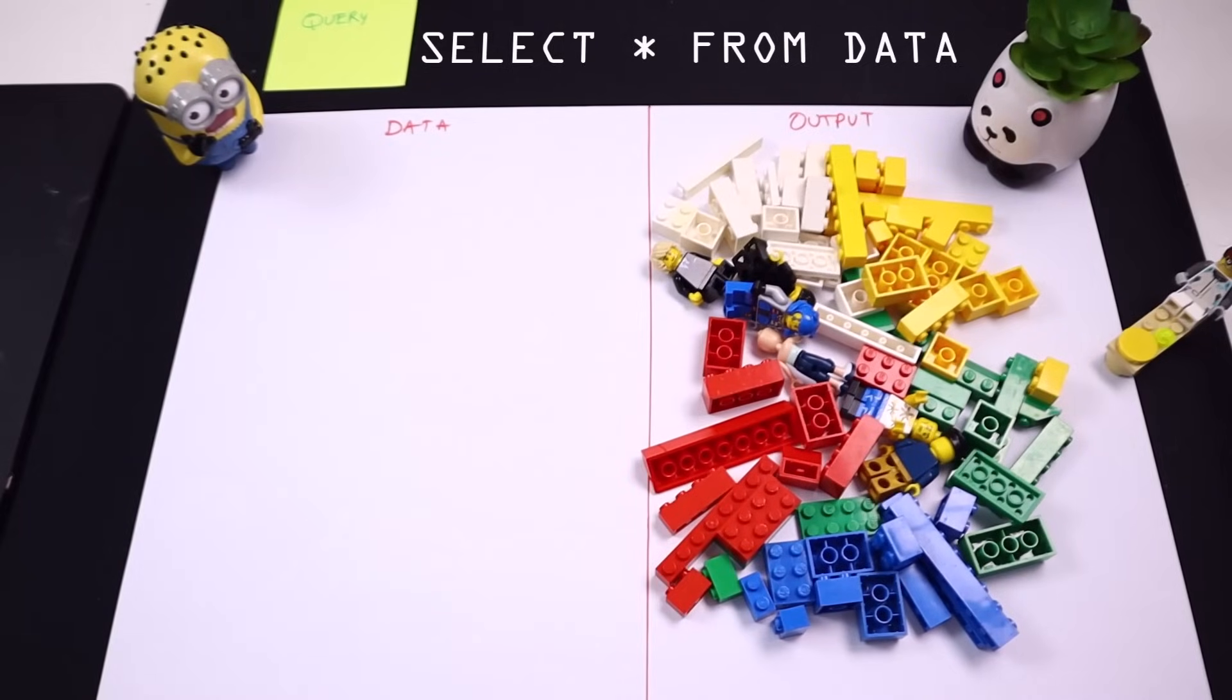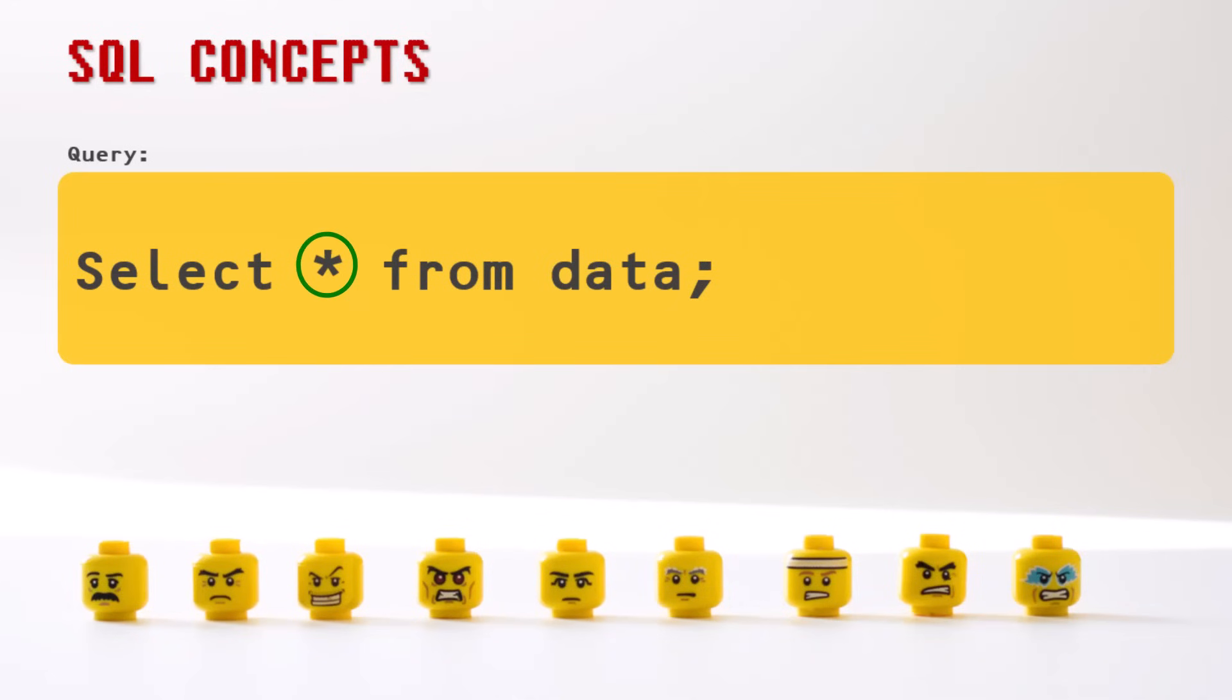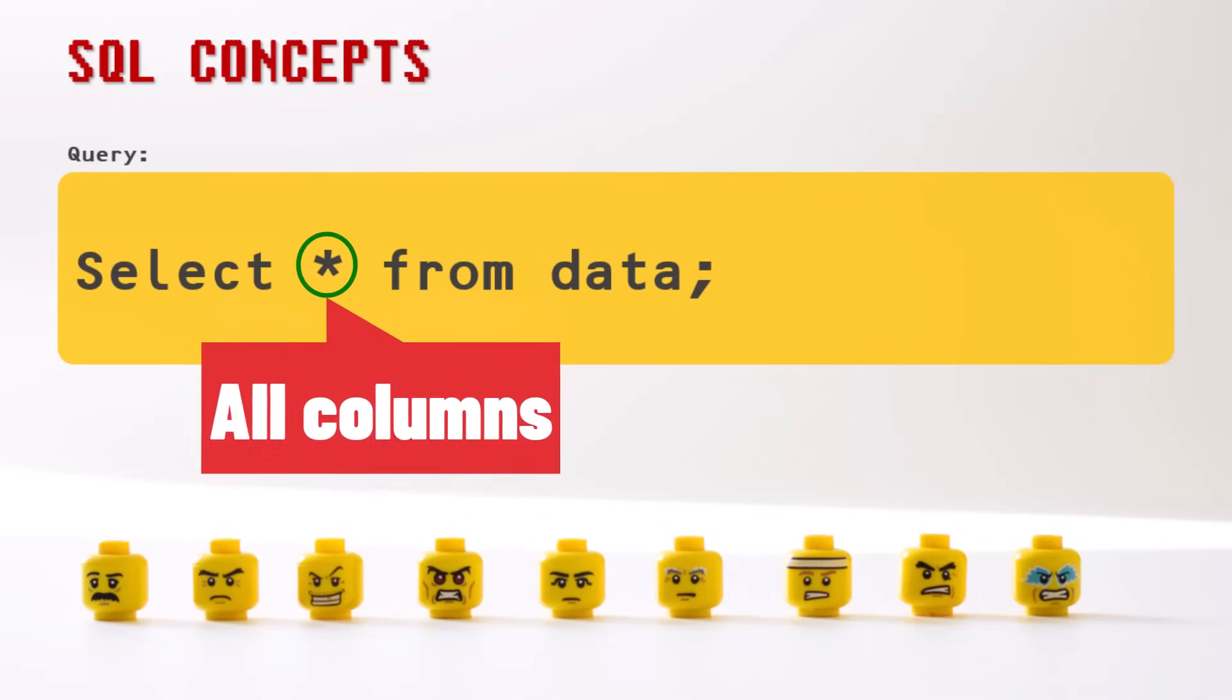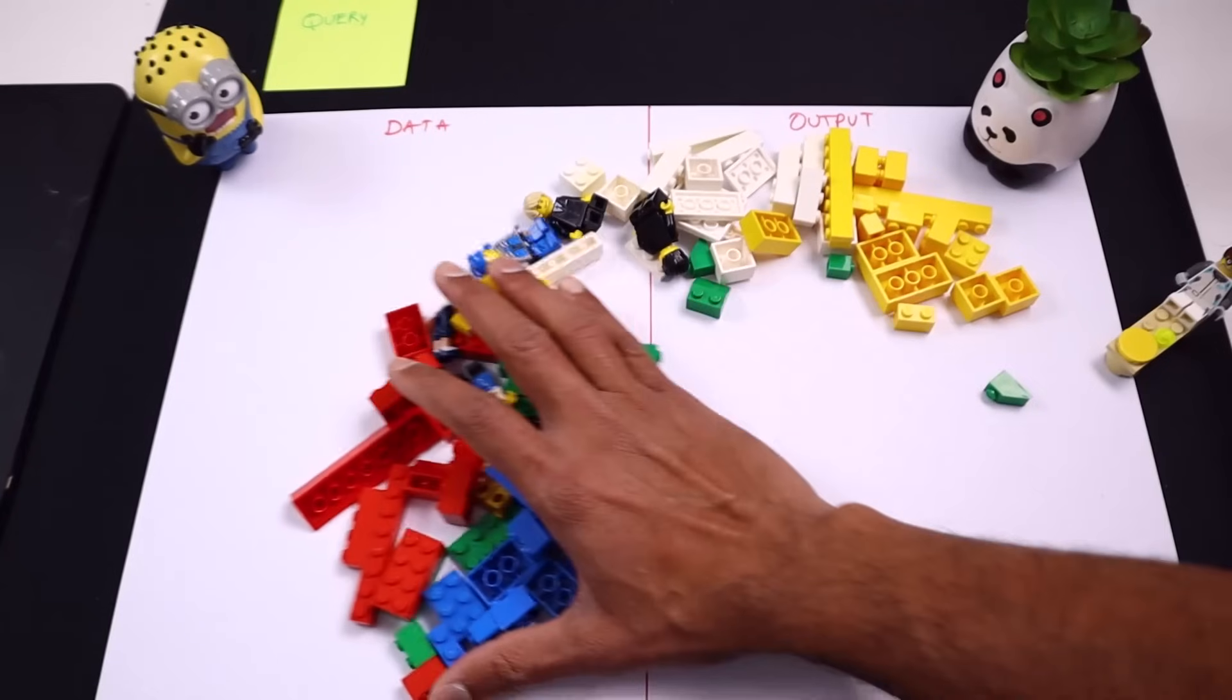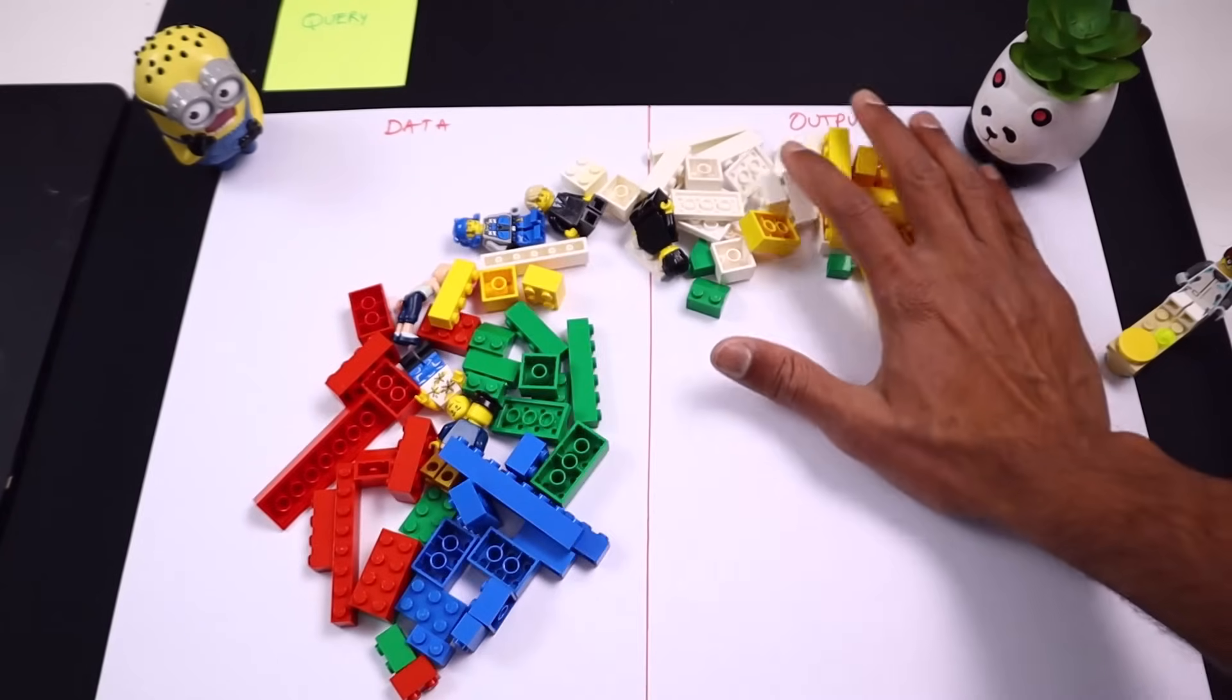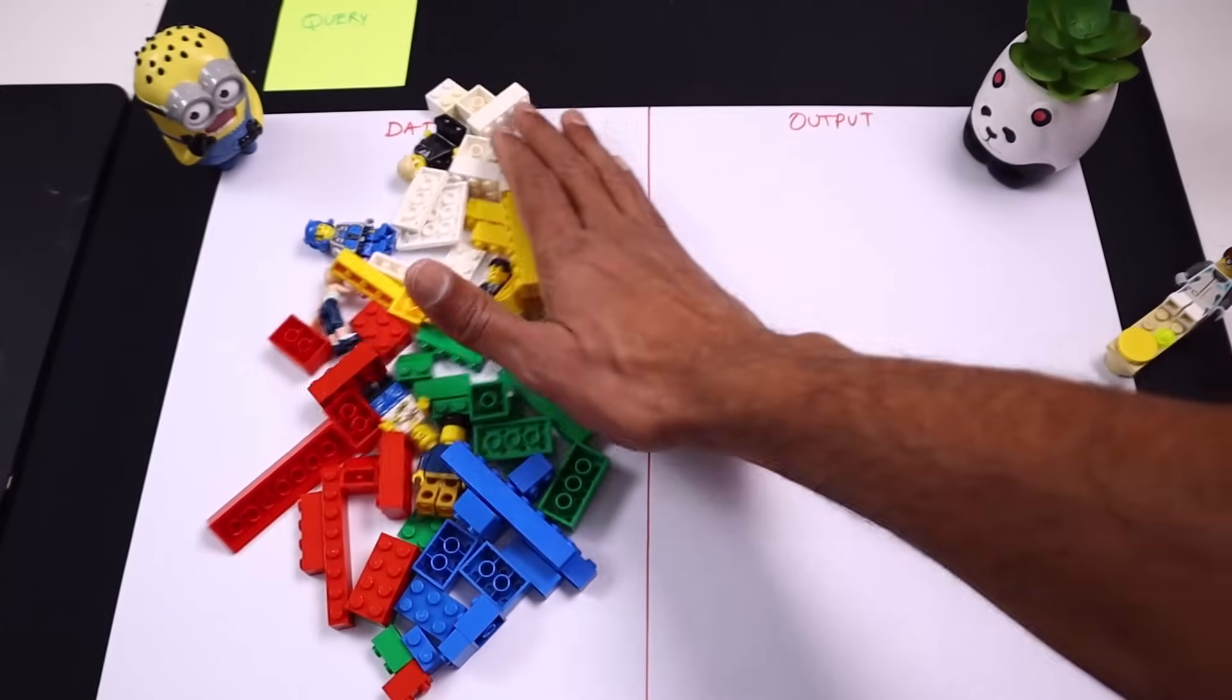Select star simply means get me everything, all the columns. Star stands for all the columns, and from data is where the table name data is mentioned.